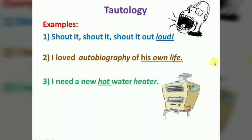Number three: 'I need a new hot water heater.' Now, if it is a heater, it is already hot — so saying 'hot' is redundant. The word 'hot' and 'water heater' refer to the same thing, making this an example of Tautology.